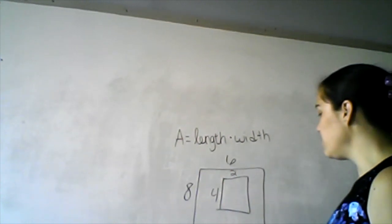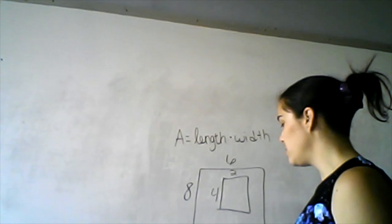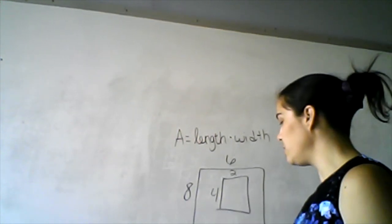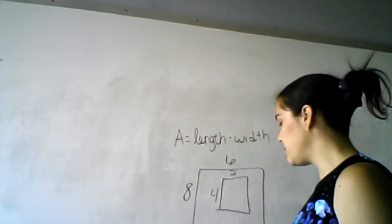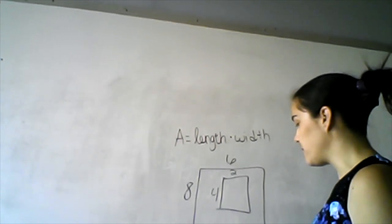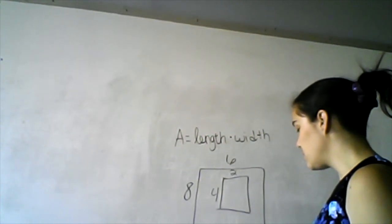We found the area of the big one, so that is 8 times 6, which is 48. And then we found the area of the small one, which is 4 times 2, which is 8. And then we would subtract, so 48 minus 8 is 40, so it is 40 squared inches.